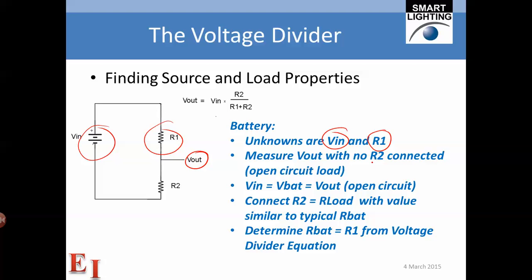When that is the open circuit load, the current through R1 will be zero, so the voltage at the output will be the same as the source voltage. Under those circumstances, Vin equals V_battery equals Vout for the open circuit.